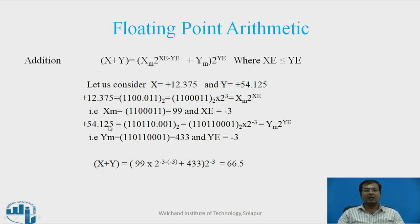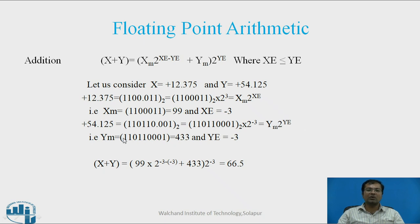For the second number, plus 54.125, in terms of binary it is 110110.001 base 2, which equals 110110001 base 2 into 2 raised to minus 3, in the form ym into 2 raised to y. Where ym is equal to 1101100001, which equals 433, and y is equal to minus 3. The sum of x and y, substituting the respective values xm, xc, ym, and y in the formula, we get 66.5. The condition here is that xc should be less than or equal to y.